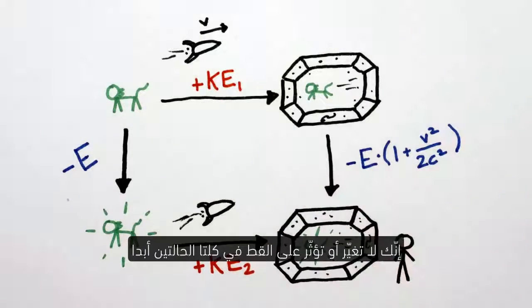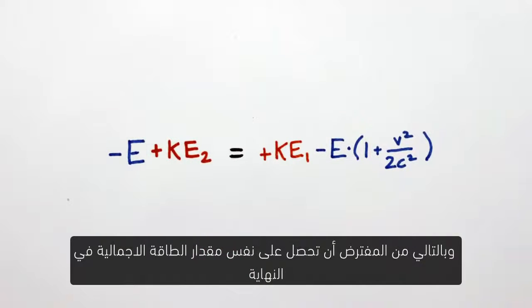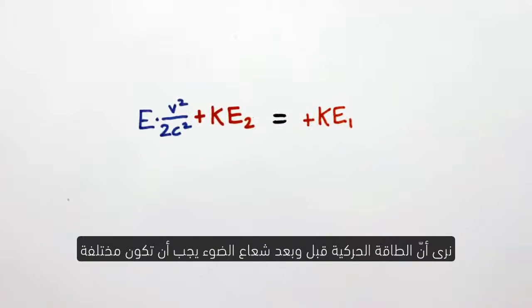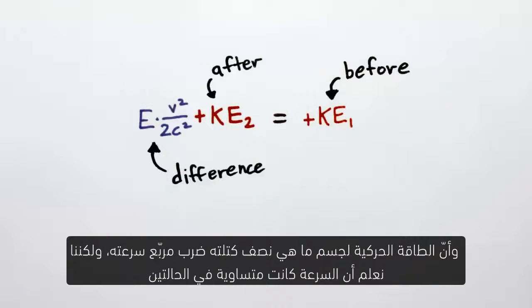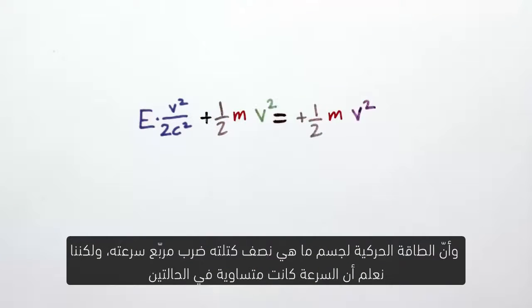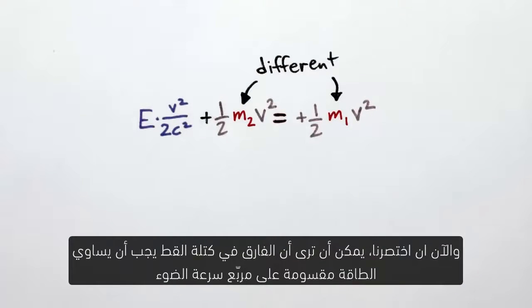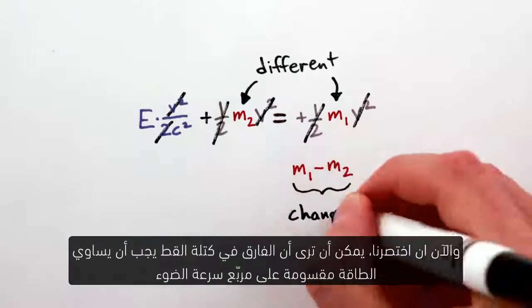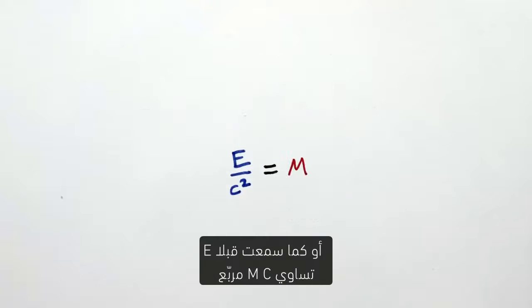But this is silly! You never touch or otherwise influence the cat in either case, so we should get the same total energy at the end. Rearranging, we see that the kinetic energies before and after the flash must be different. And the kinetic energy of an object is one-half of its mass times its velocity squared, but we know that the velocity was the same in both cases. So in order to account for the difference, the cat's mass must change when it emits the flash of light. Now, if we cancel things out, you can see that the change in mass of the cat must be equal to the energy of the light emitted divided by C squared. Or, as you've heard before, E equals mc squared.